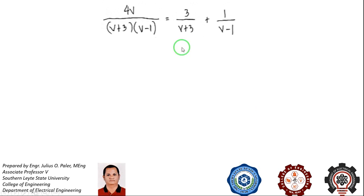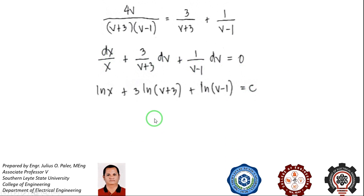So the resulting fractions are 3/(v + 3) + 1/(v - 1). If we write this as an equation together with dx/x, all of the terms lead to logarithm. So you have ln(x) + 3 ln(v + 3) + ln(v - 1) = c.